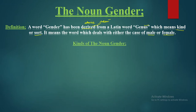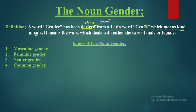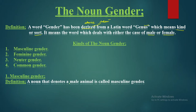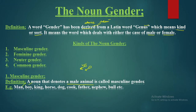There are four kinds of noun gender. The first is masculine gender, the second is feminine gender, the third is neuter gender, and the last is common gender. Masculine gender: a noun that denotes a male animal is known as masculine gender. Examples include: man, boy, king, dog, cook, father, nephew, bull, etc.